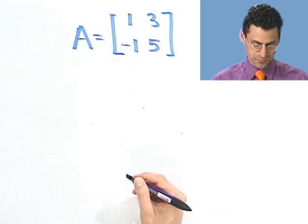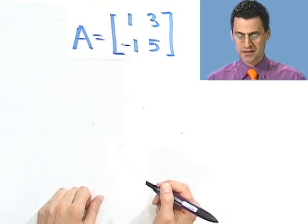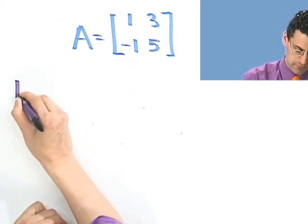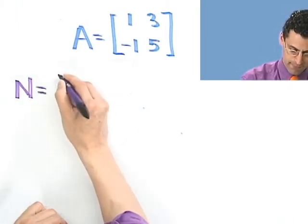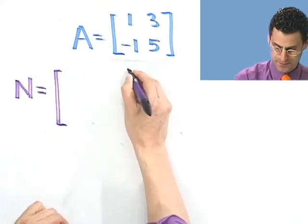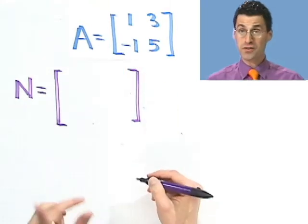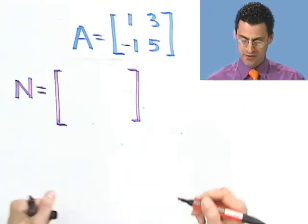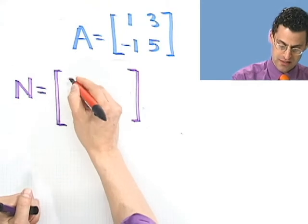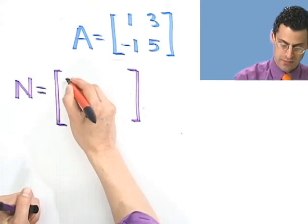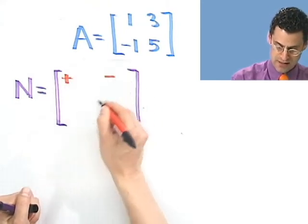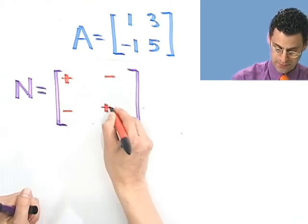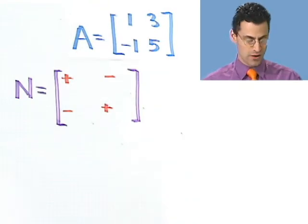Now, here's another way of getting the answer. Let's take this matrix, and let's make a new matrix. Let me call it N for new. And here's what I'm going to do. First thing I'm going to do is I'm going to put in those signs, like we put in when we took determinants. So we start off with a plus, and then we alternate. So I put in a plus, minus, plus, minus, and this would be a minus, plus. So I just alternate everywhere.